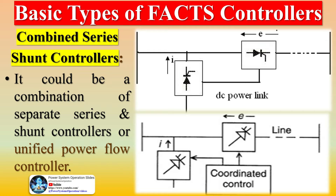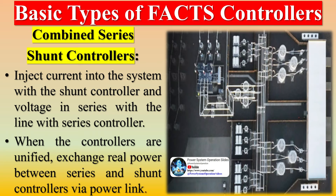Combined series-shunt controllers could be a combination of separate series and shunt controllers or a unified power flow controller. They inject current into the system with the shunt controller and voltage in series with the line with the series controller. When the controllers are unified, real power is exchanged between series and shunt controllers via a power link.